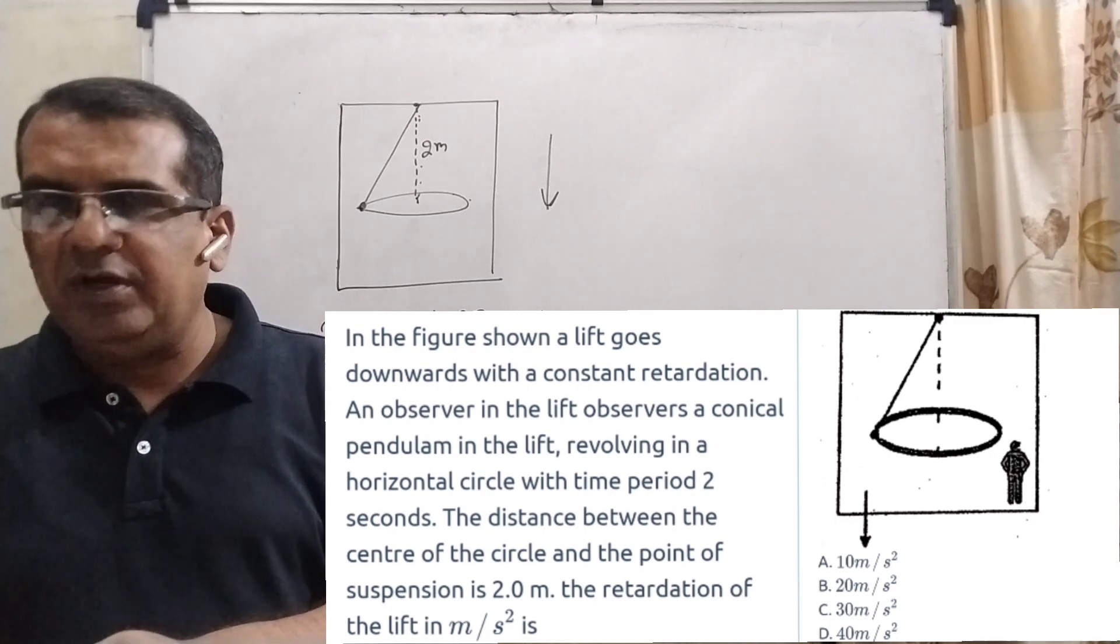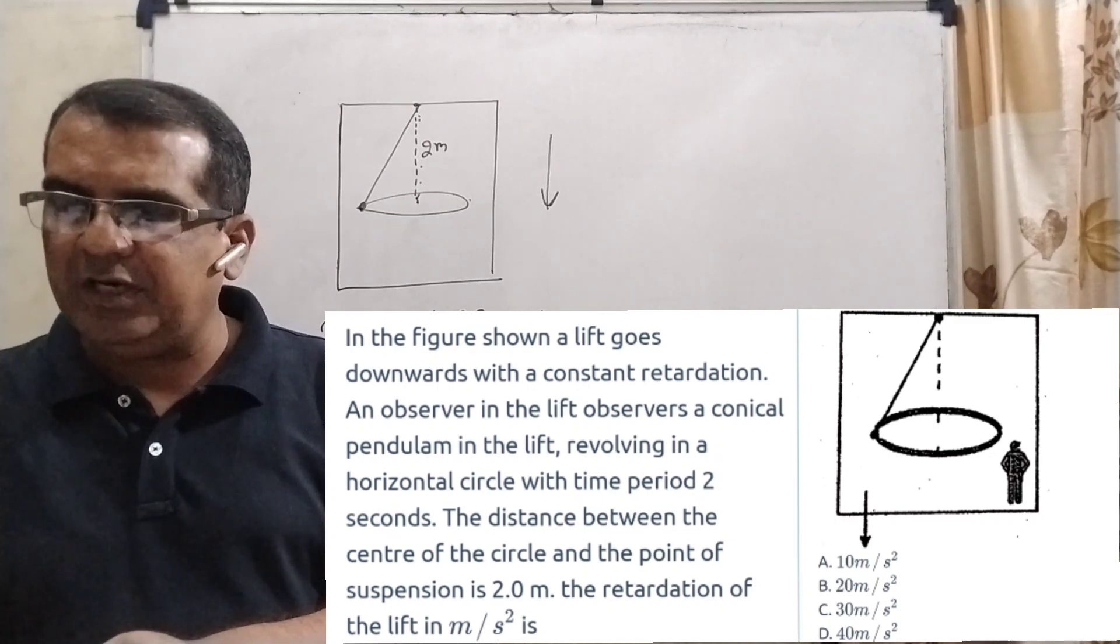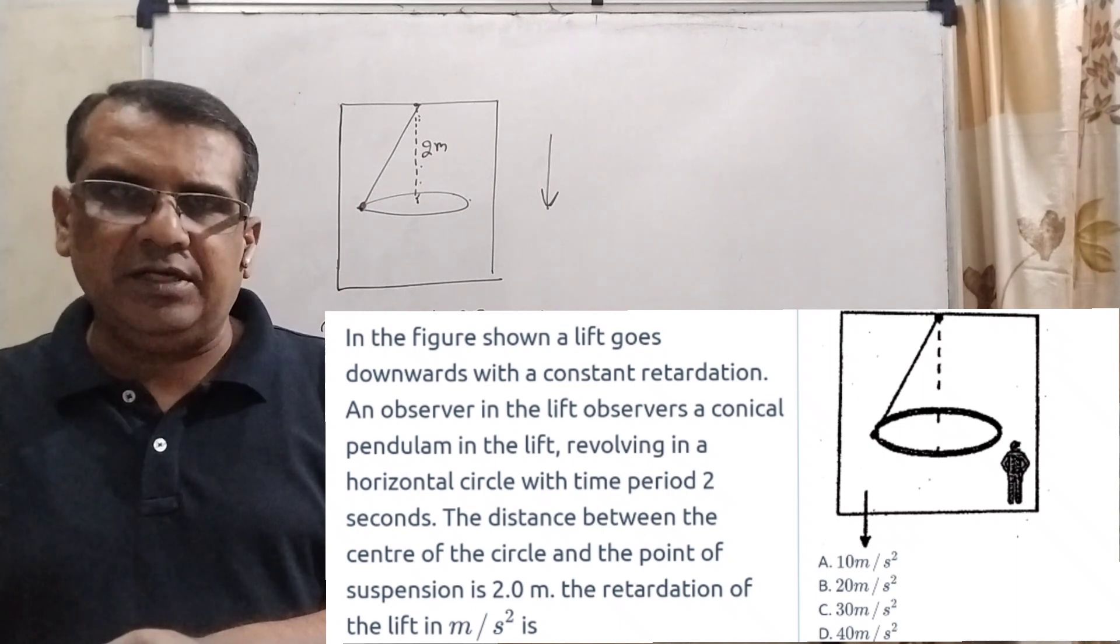And there are options. A: 10 meter per second square. Option B: 20 meter per second square. Option C: 15 meter per second square. And option D: 5 meter per second square.